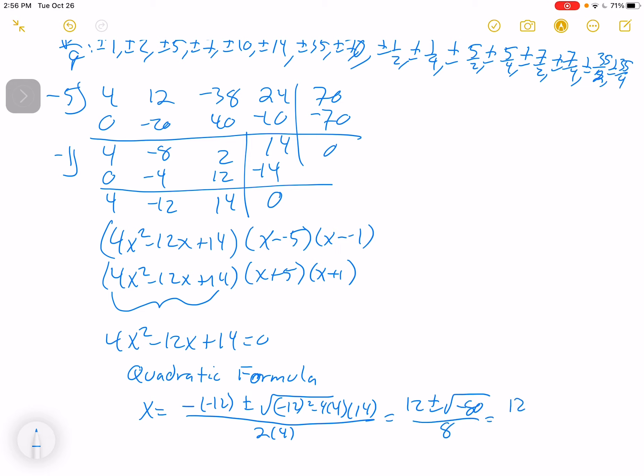This is going to be 12 plus or minus the square root of negative 80 all over 8. Square root of 80, that's 16 times 5. So if I pull that negative out, that would be square root of 16 is 4, so 4i times the square root of 5 all over 8.